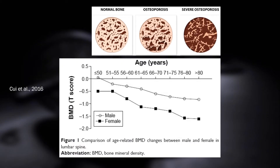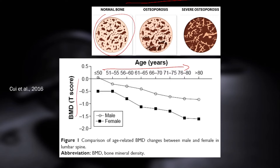Here's a look at normal bone, and as we go down the line, we get osteoporosis and then severe osteoporosis in the other two pictures to the right. On the graph, age is on the x-axis and bone mineral density is on the y-axis. Males start off with greater bone mineral density than females, but both males and females lose it with age. Women especially, in their latter few decades, lose a ton of bone mineral density on average.